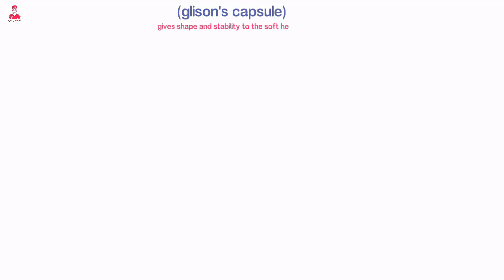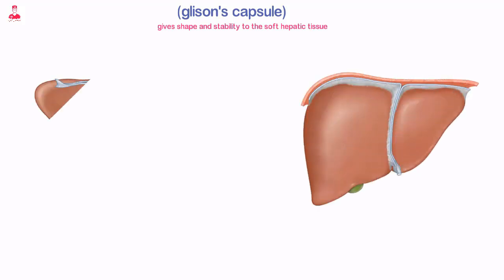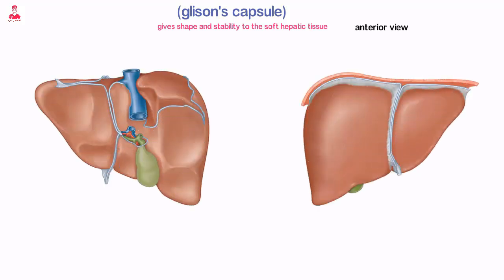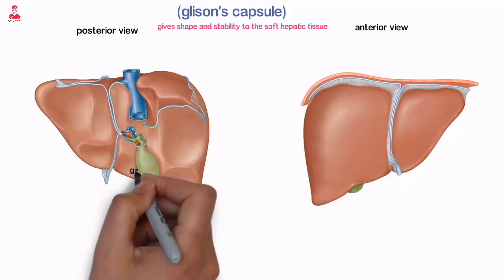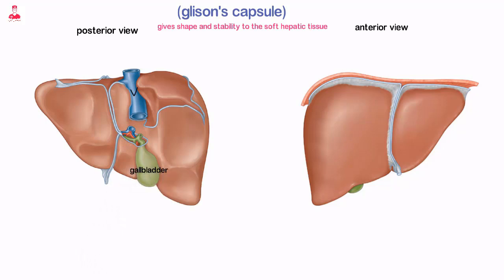The liver is surrounded by a strong connective tissue capsule, Glisson's capsule, that gives shape and stability to the soft hepatic tissue. It is also entirely covered by peritoneum except for the gallbladder fossa, the surface opposed to the inferior vena cava, and the bare area, which is the liver surface between the superior and inferior coronary ligaments.